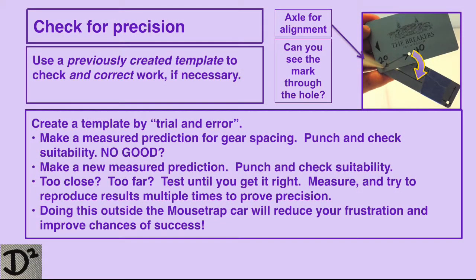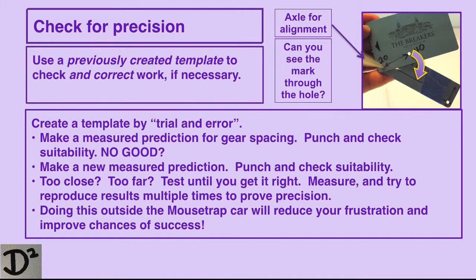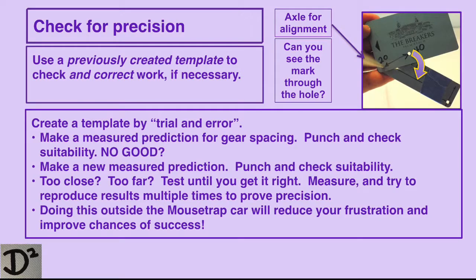If the gears are too close, measure again from the original corner axle hole along another previously drawn radius to measure a distance that puts the gears a little farther apart. Mark with the crosshairs. Label with the distance. Punch, sand and check. Is it right?